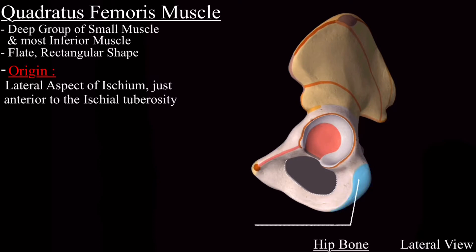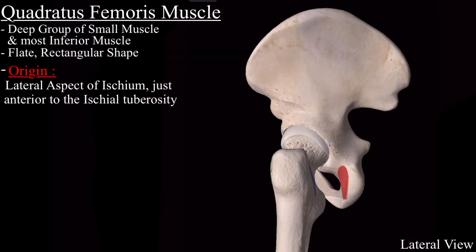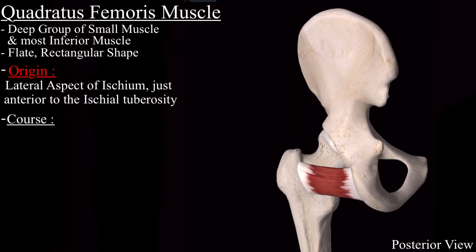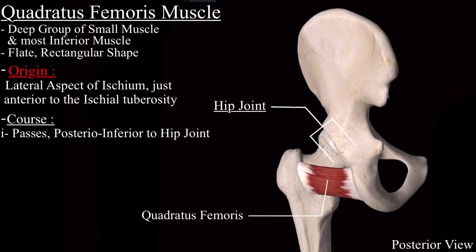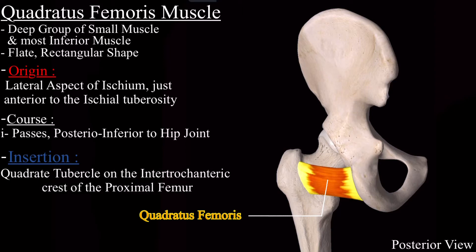On the lateral aspect of the ischium bone, this is the ischial tuberosity. Since this is the lateral view, this is the inferior side and this is the posterior side. Inferior to the ischial tuberosity, the quadratus femoris muscle originates. After origination, it passes posterior and inferior to the hip joint.